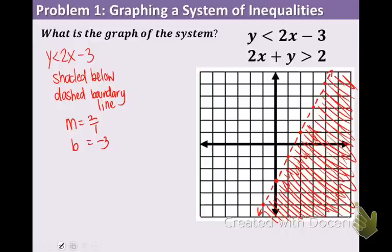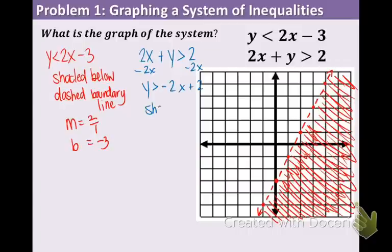Now let's focus on the other inequality — I'm going to make this blue. Originally it's not in slope-intercept form, so let's rearrange it. Subtract 2x to the other side, so y is greater than negative 2x plus 2. We're going to be shading above because of the greater than symbol, and it's going to be a dashed boundary line because there's no line under the symbol.